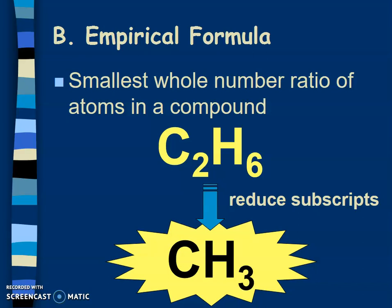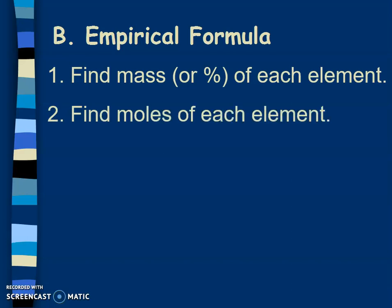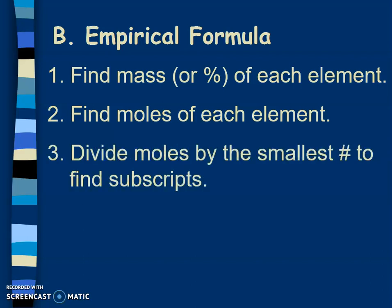So how do you find an empirical formula? First, you find the mass or the percent of each element in the compound - that's why we had to learn how to do percent composition first. Then you use that to find the moles of each element.